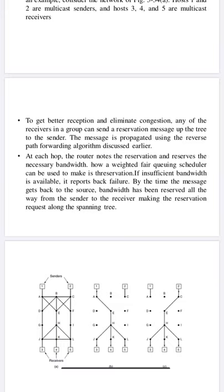If the resources are available, those resources are going to be reserved. This means bandwidth has been reserved all the way from the sender to the receiver, making the reservation request along the spanning tree. Once the resources are reserved, the sender can easily send the data from source to destination without any problem. Packets will be delivered without any delay, congestion is removed, and quality of service is improved.